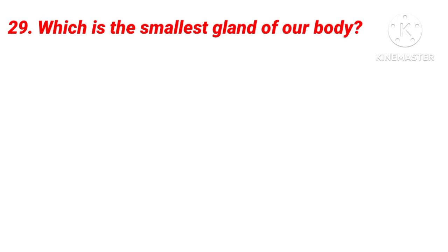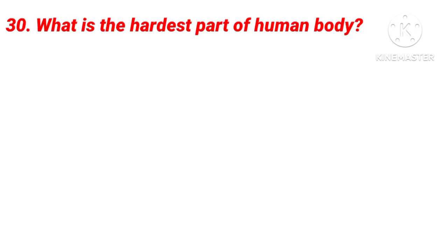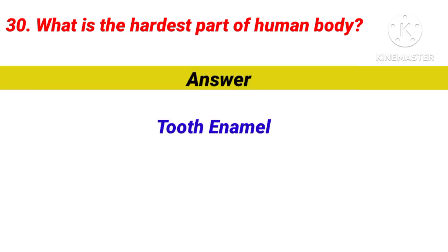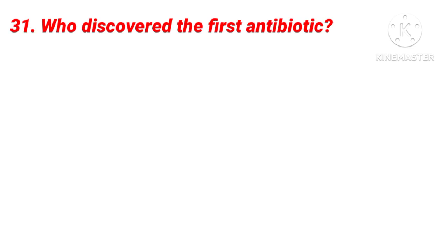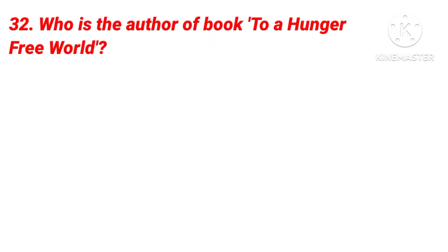Question 29: Which is the smallest gland of our body? Answer is the Pineal Gland. Question 30: What is the hardest part of the human body? Answer is Tooth Enamel. Question 31: Who discovered the first antibiotic? Answer is Alexander Fleming.